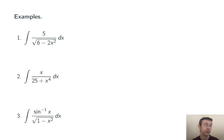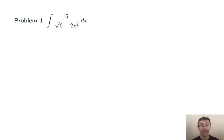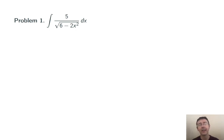All right, let's do some problems. Here are the three that we're going to do. Number one: integral of 5 over the square root of 6 minus 2x squared dx. Right off the bat, I suspect that this is going to be an arc sine — I see something like one over the radical of 1 minus x squared, just with the constants a little bit off. So our job is going to be to fix that.